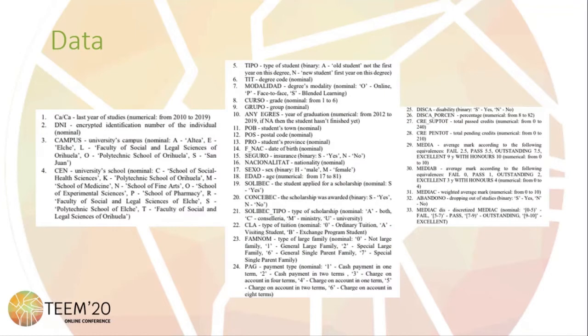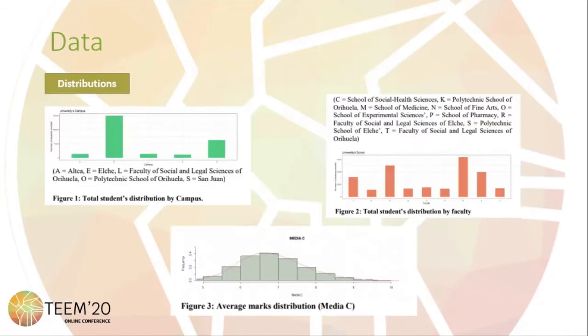The database has 33 variables. The most important ones are 'abandono' and 'mediasetdis', used as dropout variables in the classification trees.